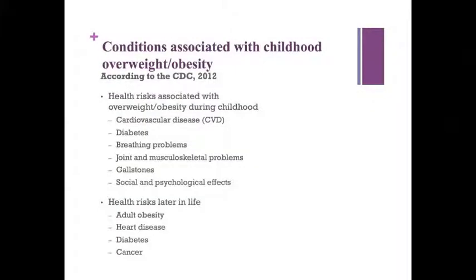Obese children and adolescents not only have a greater risk for health conditions such as high blood pressure, high cholesterol, diabetes, joint problems, fatty liver disease, and sleep apnea, but also have a greater risk of social and psychological problems such as discrimination and poor self-esteem. Later in life, those who are overweight or obese during childhood are more likely to become obese adults, with more severe obesity than if they had been normal weight as a child. Adult obesity is associated with heart disease, diabetes, and cancer.